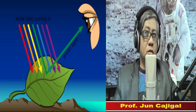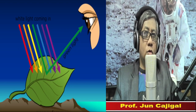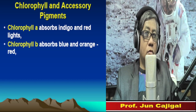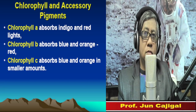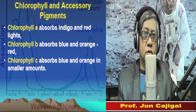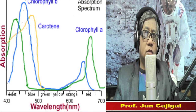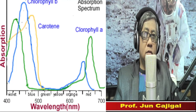There are several types of chlorophyll. Chlorophyll a absorbs indigo and red lights. Chlorophyll b absorbs blue and orange-red light. Chlorophyll c absorbs blue and orange in smaller amounts. Each color in the visible light range has a characteristic absorption spectrum describing how it absorbs or reflects different wavelengths of light.